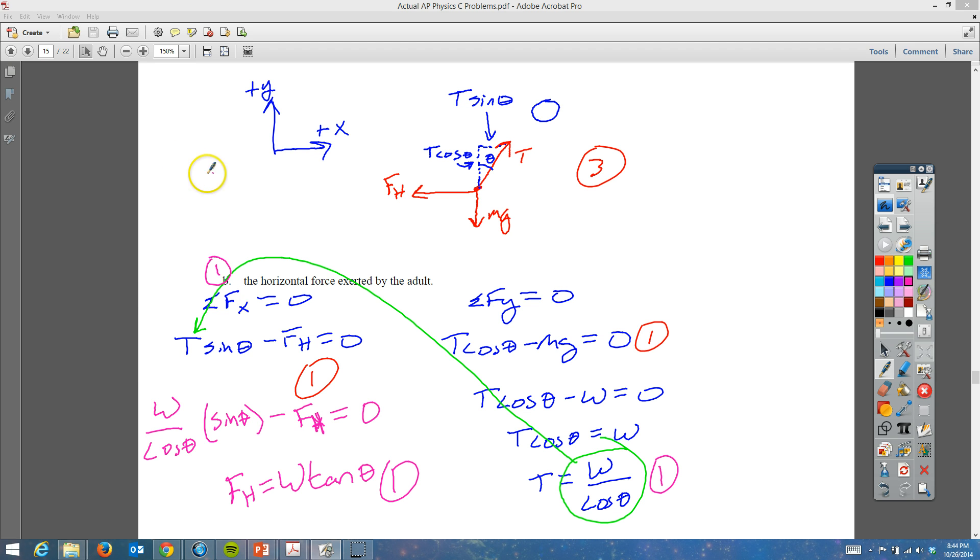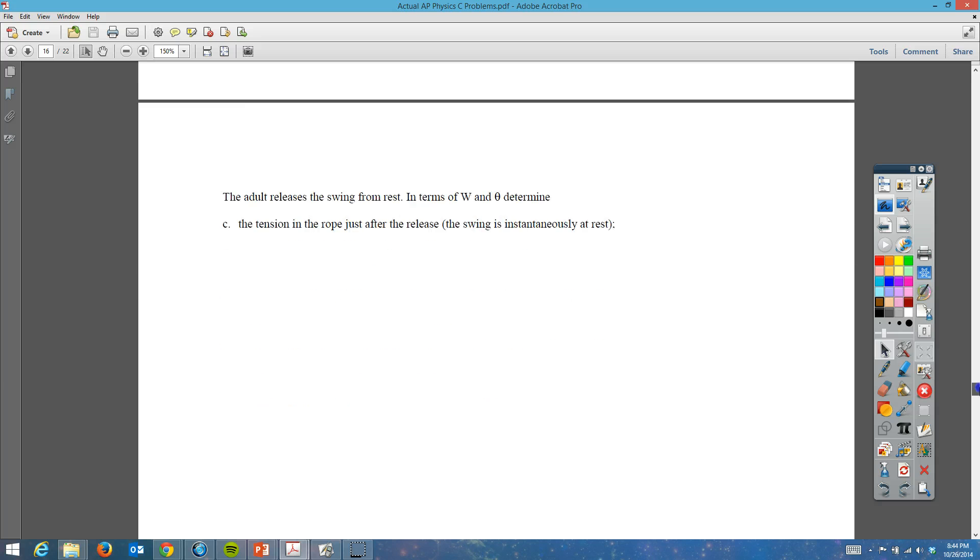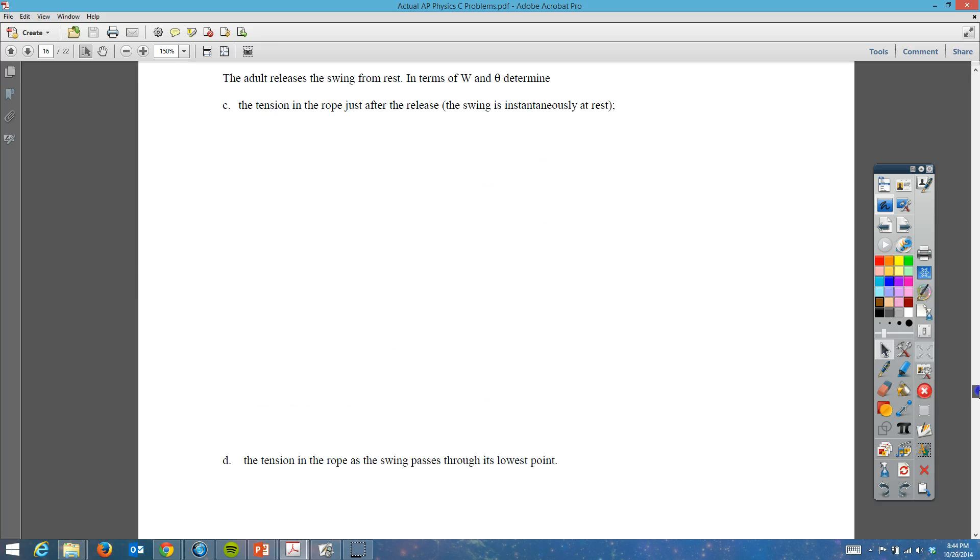So this is where you're going to get your other point. You really probably get a point for having this guy and then using this back into this equation in order to get the FH is equal to W tangent of the angle. So part B is really one point, and then your part A was most likely six points. So just really kind of a strange way for this to happen, but that's how they did it that year. And that's what we're going to stick to for the next part. This one says part C, the adult releases the swing from rest.